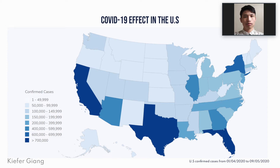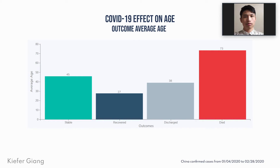Each state is responsible for the types of policies that they set for controlling the virus, and each policy is different from one another. This is the most likely reason why some states surged with cases while others didn't increase in cases at all. Another possible reason could be the fact that the USA has many populated cities. In terms of who should be wary of COVID-19, we concluded that elderly people are at the most risk. Our visualization showed that the average age for those that died in China was 73, while the average age of those that recovered was 27.